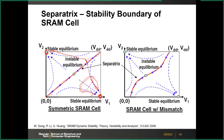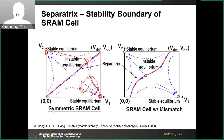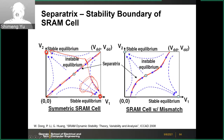For a symmetric SRAM cell with no transistor mismatch the separatrix is a straight line, but in reality the SRAM cell may suffer from process variation mismatch, so the boundary may not be a straight line.